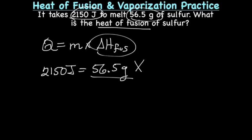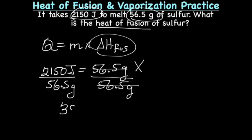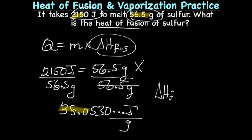So to solve for x, we'll divide both sides by 56.5 grams. And that gives us 38.0530 joules per gram. And now if we go back and look at sig figs, we have 3 sig figs here and 3 sig figs there, so our answer will have 3 sig figs. So as a final answer, the ΔH_fus for sulfur is 38.1 joules per gram.